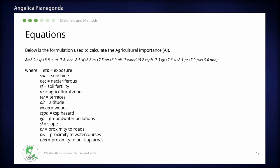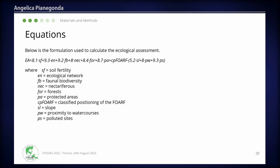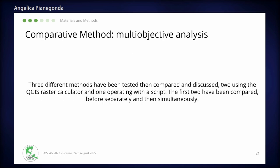After weighting the parameters, we developed two equations to calculate the agricultural importance and also to quantify and assess the ecological aspects of the analyzed areas. We ran three different methods to test and assess these areas, and then the methods were compared and discussed. The first two methods were run through the QGIS raster calculator, while the third was operated with a script. The first two were compared first separately and then simultaneously.